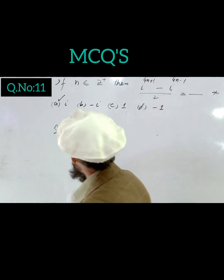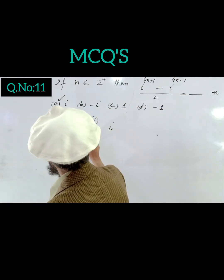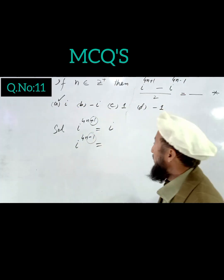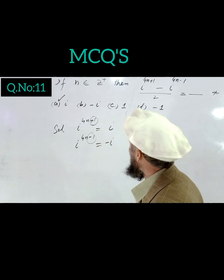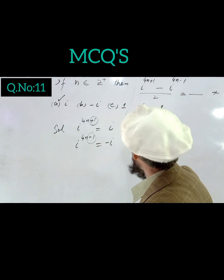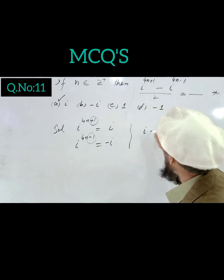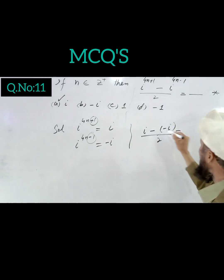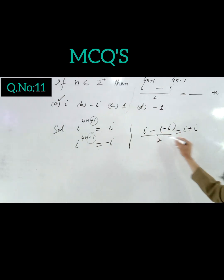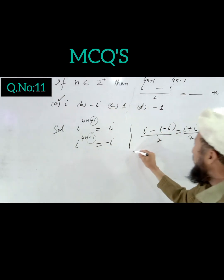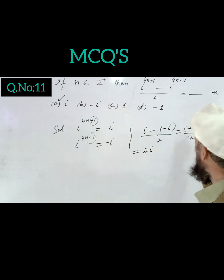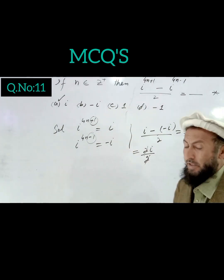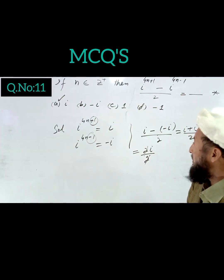For iota^(4n-1), the remainder gives minus iota. Substituting into the expression: (iota minus (minus iota)) divided by 2 equals (iota plus iota) divided by 2, which gives 2 divided by 2 equals iota. So the answer is iota.